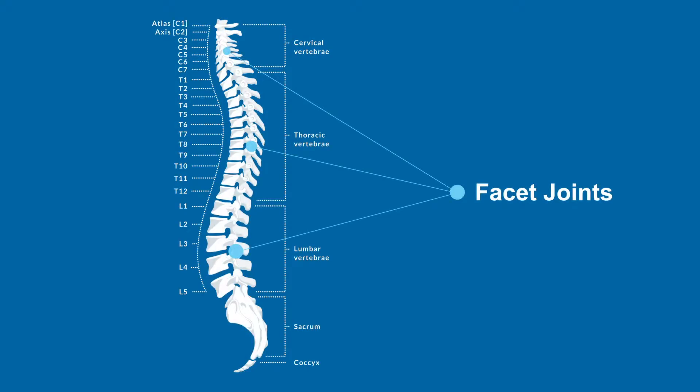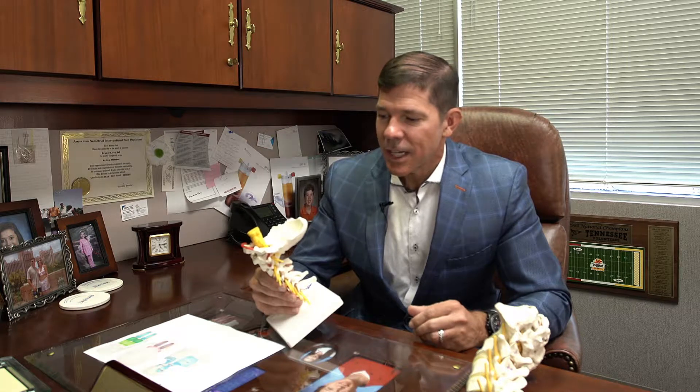Arthritis of the cervical spine, mid-back (thoracic spine), and lumbar spine causes people pain especially when they rotate their head or twist their spine. The facets allow our spine to move back and forth — without those joints, we wouldn't have that motion. Wherever there's a joint there's cartilage, and cartilage can break down over time, so arthritis develops wherever there's cartilage.